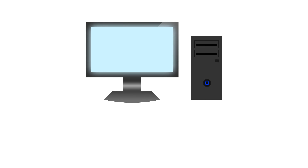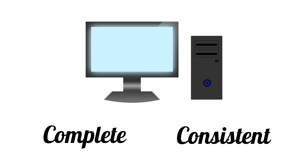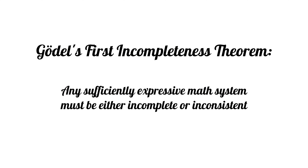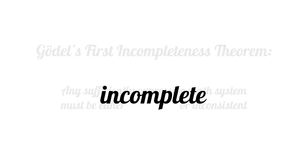So far, we have a sufficiently expressive math system that we want to be complete and consistent. Unfortunately, this isn't possible. Gödel's first incompleteness theorem tells us that any sufficiently expressive math system must be either incomplete or inconsistent. This is very unfortunate news, and given how bad inconsistency is, we're forced to hope that our system is incomplete.